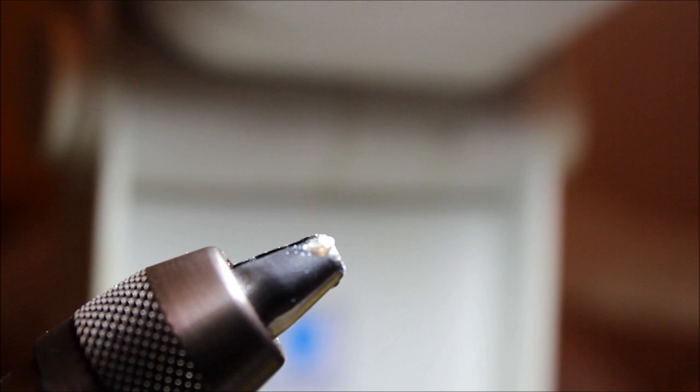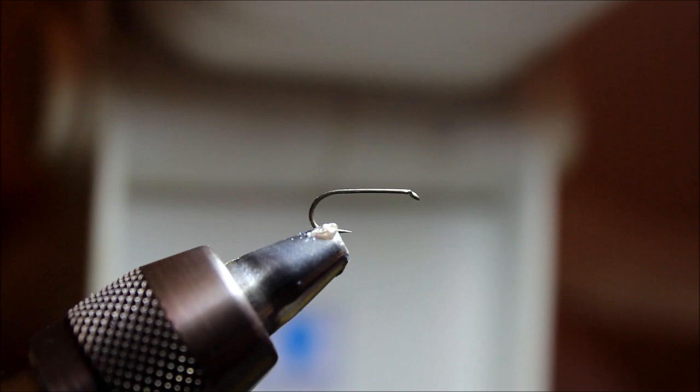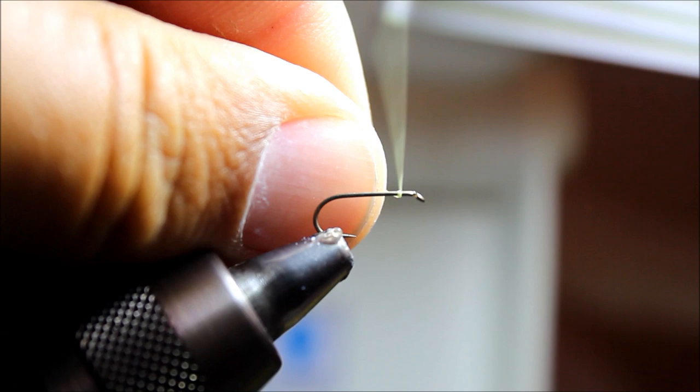I've got an Umpqua U001 Dry Fly hook number 16 mounted in the vise. I'm going to be using some Vivas thread that's a light yellow and an ADOT. I'm going to start by starting my thread on the hook.